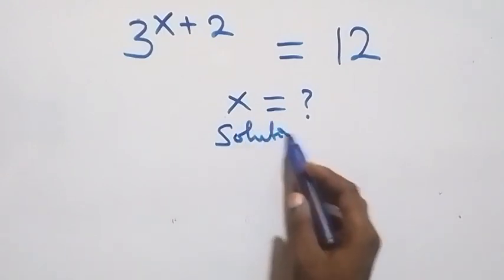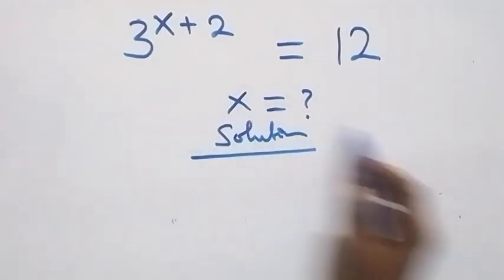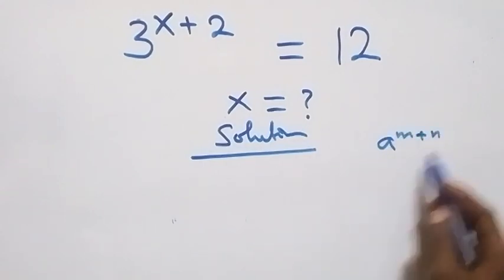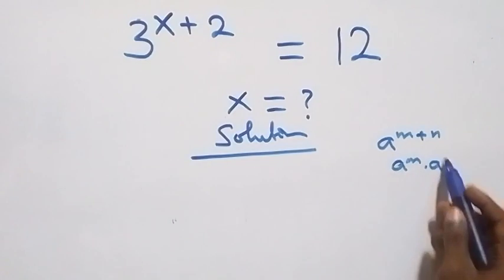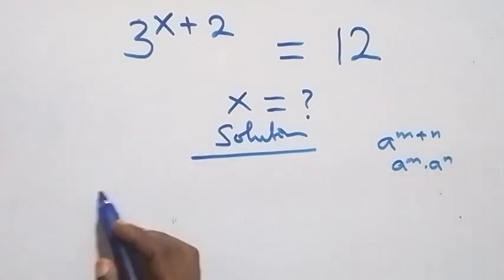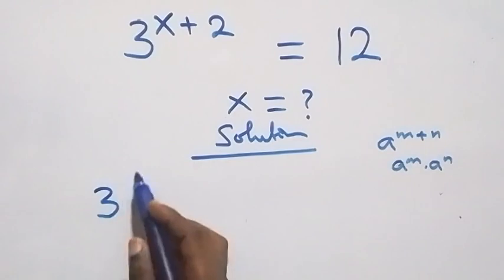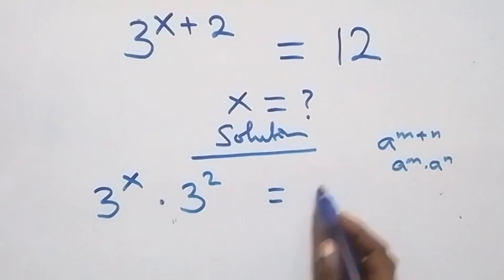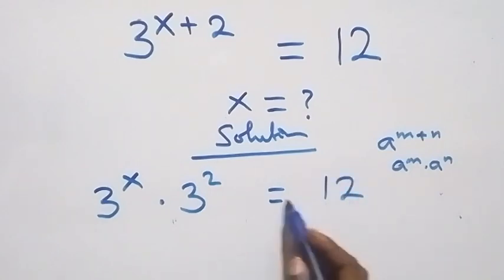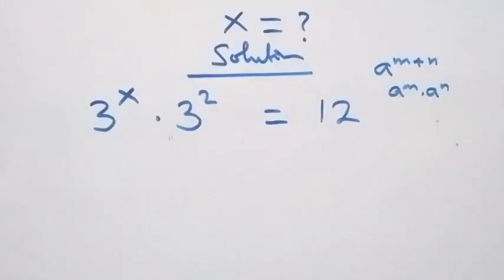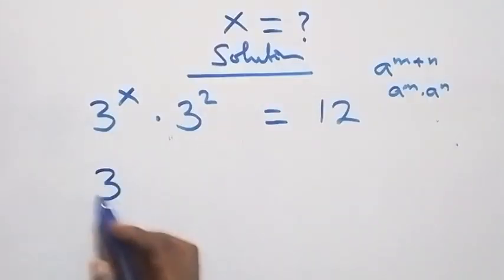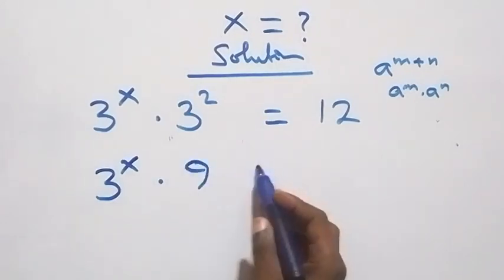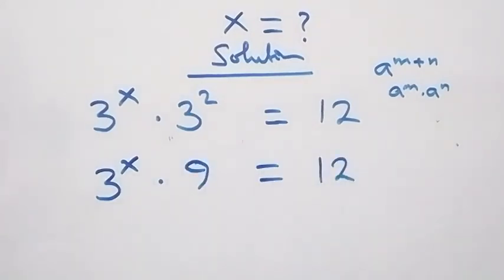Solution from here. We can apply the law of indices: e raised to power n plus n is the same thing as e raised to power n times e raised to power n. So here we have 3 raised to power x times 3 squared, which equals 12. That is, 3 raised to power x times 9 equals 12.